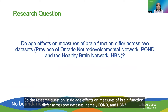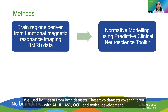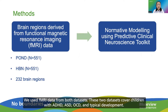So the research question is: do age effects on measures of brain function differ across two data sets, namely POND and HBN? We used fMRI data from both data sets. These two data sets cover children with ADHD, ASD, OCD, and typical development.